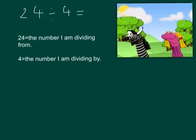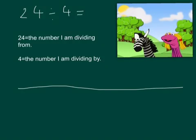So, the first step we need to do is we need to draw a number line. On the left, we place 0. And on the right, we place the number we are dividing from, 24.